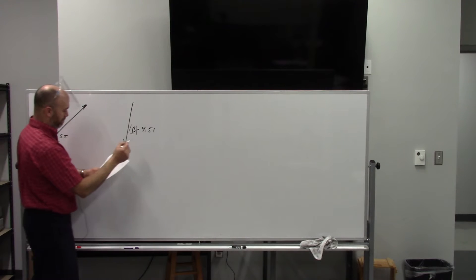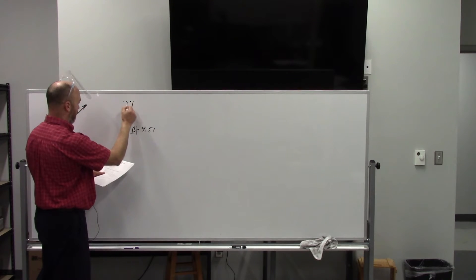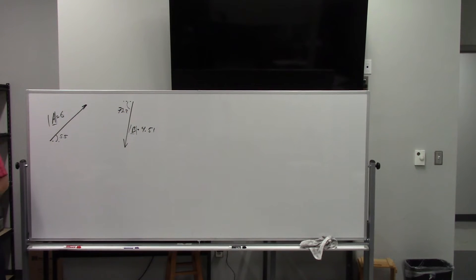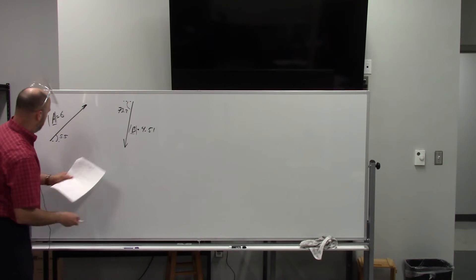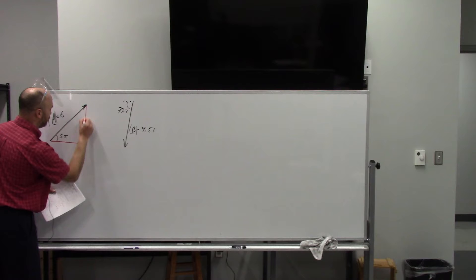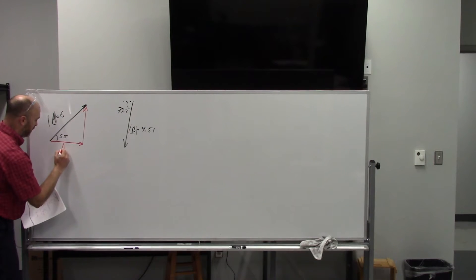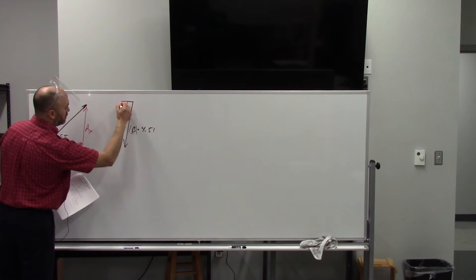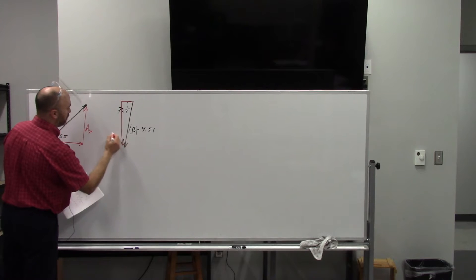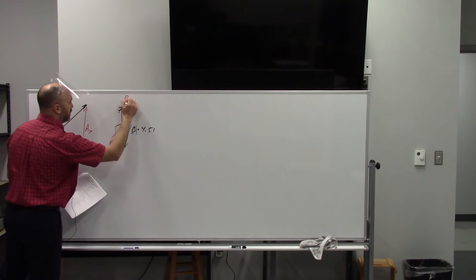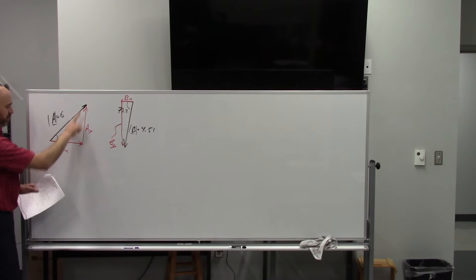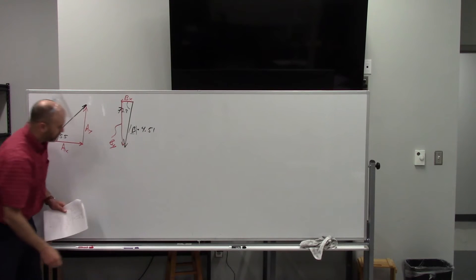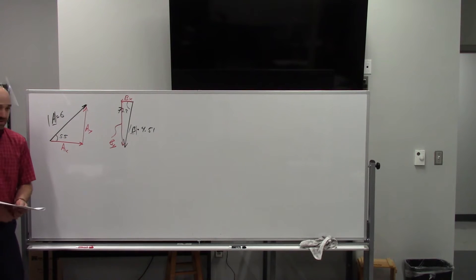The angles are 55 and 73 degrees, and you can break these down into X and Y components — which is what you do every time you have a crooked vector. Break them down into X and Y, so this would be AX, AY, BY, and BX. Make sure you get your arrows in the right direction, then you use SOH-CAH-TOA to find each part.